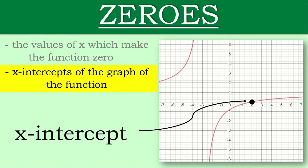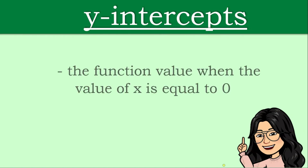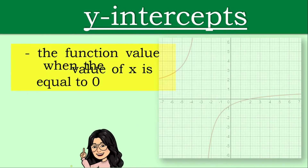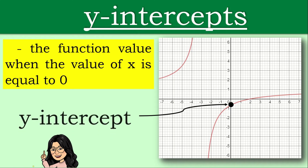How about your y-intercept? It is defined as the function value when the value of x is equal to zero. In this example, the y-intercept is at this point — this is the value of the given function when x is equal to zero. So that is our y-intercept.